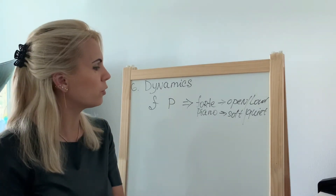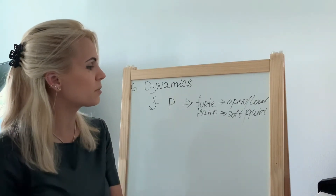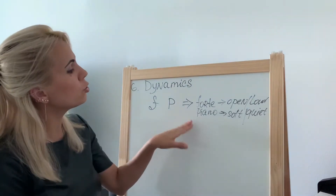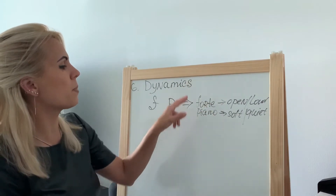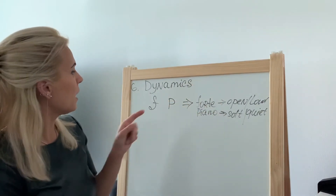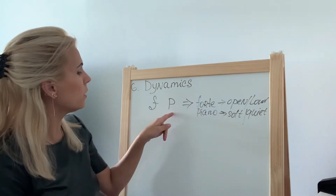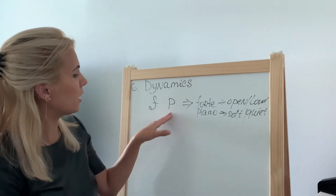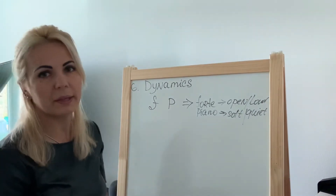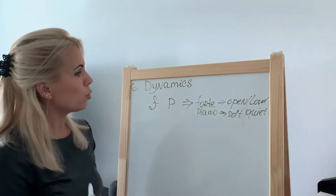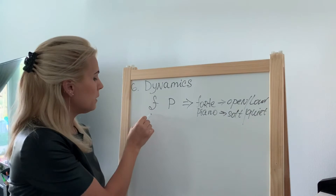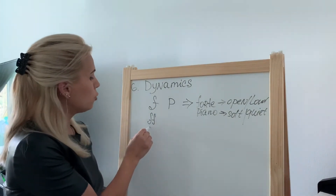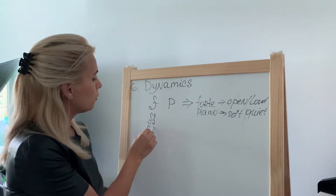In a music sheet, these terms are not written as full names but as capital letters. Forte is written as a capital F, and piano as a capital P. You can also encounter double forte, which is called fortissimo, and you can also see triple forte.